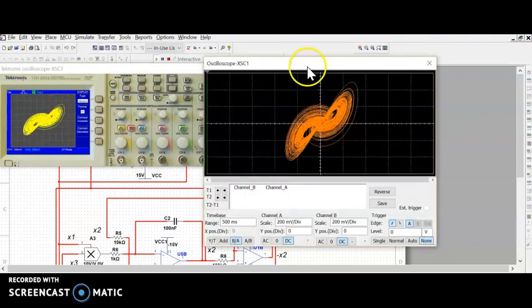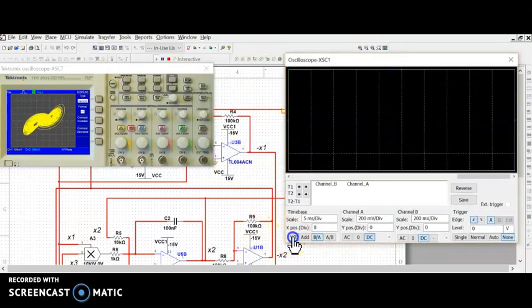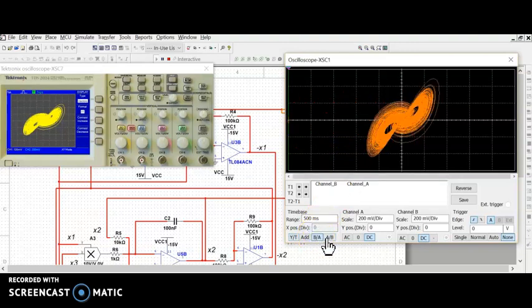Also I can use another oscilloscope here. Time series can also be seen, the attractor here.